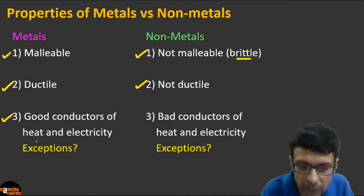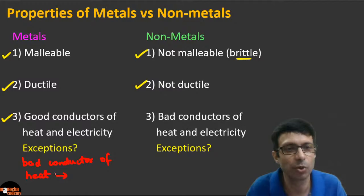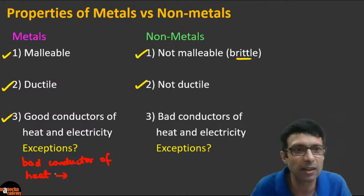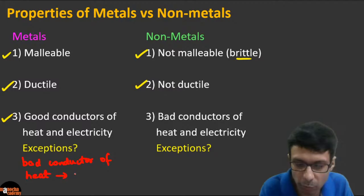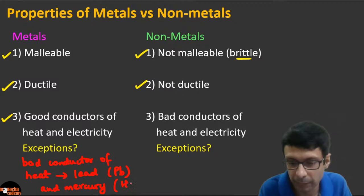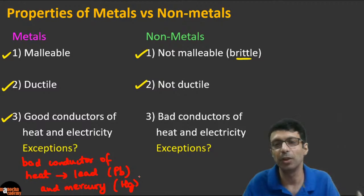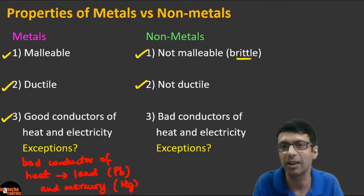Are there exceptions to metals being good conductors of heat? Yes — the most famous ones are lead (symbol Pb) and mercury (symbol Hg), which are poor conductors of heat. Other examples include tungsten and bismuth.